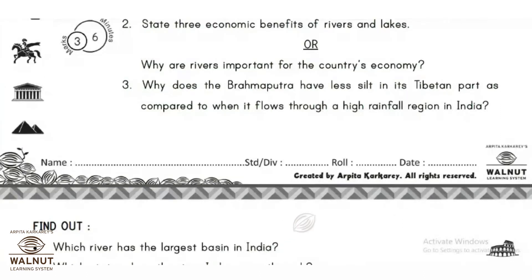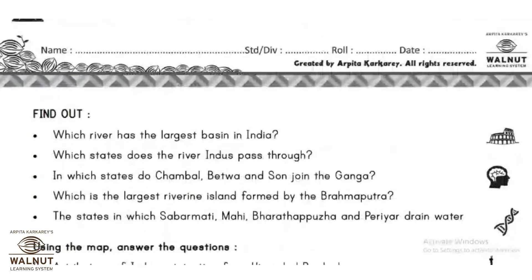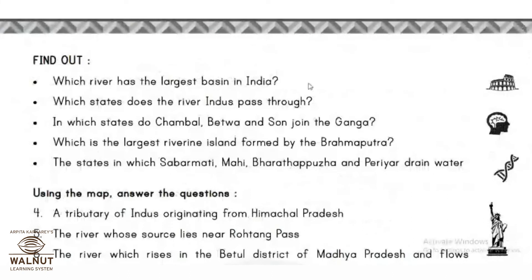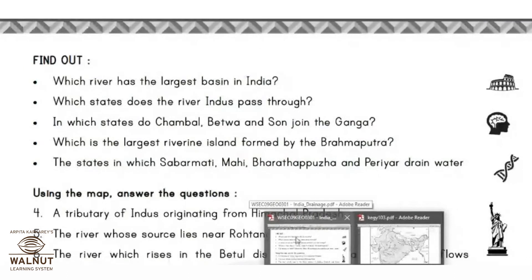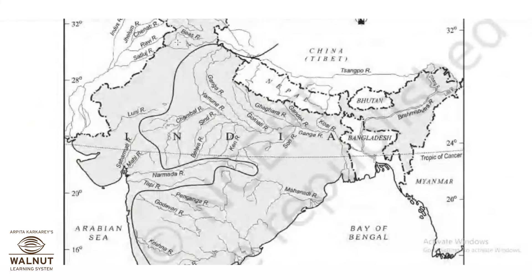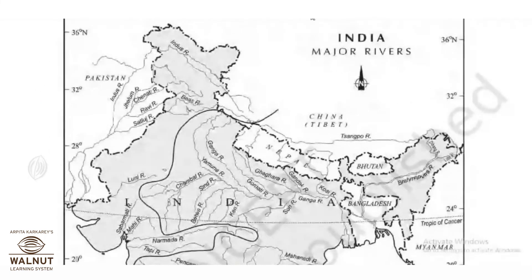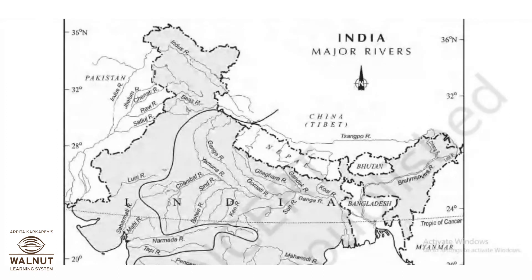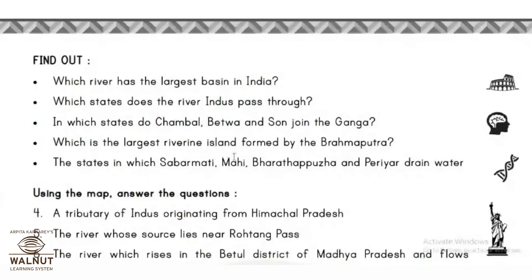Worksheet questions: Which river has the largest basin in India? The answer is Ganga. Which states does the Indus pass through? Indus passes through Jammu and Kashmir, Himachal Pradesh, Punjab, and Chandigarh — the remaining part is in Pakistan.